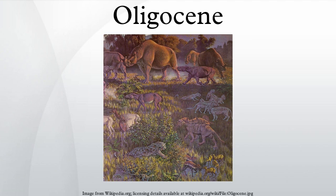Early desmostylians, like Behemotops, are known from the Oligocene. Pinnipeds appeared near the end of the epoch from an otter-like ancestor.